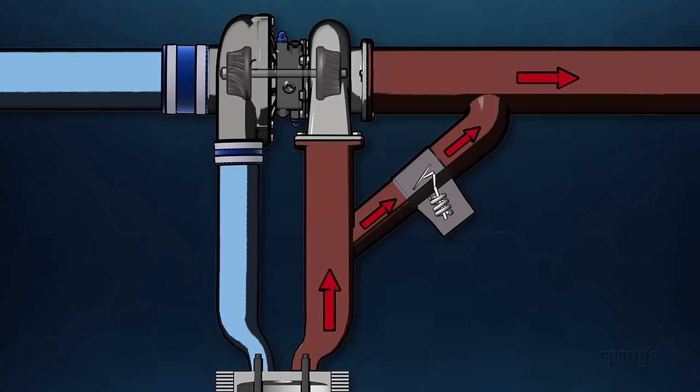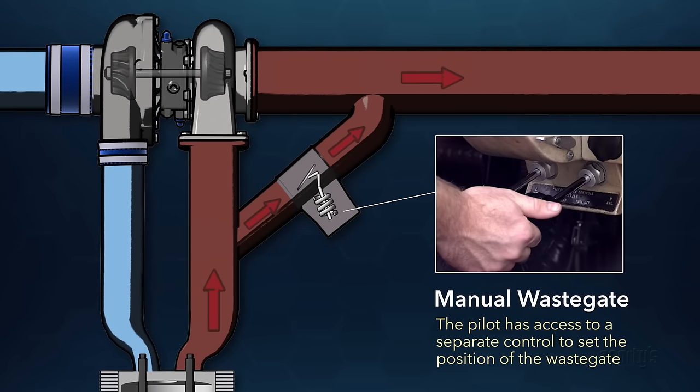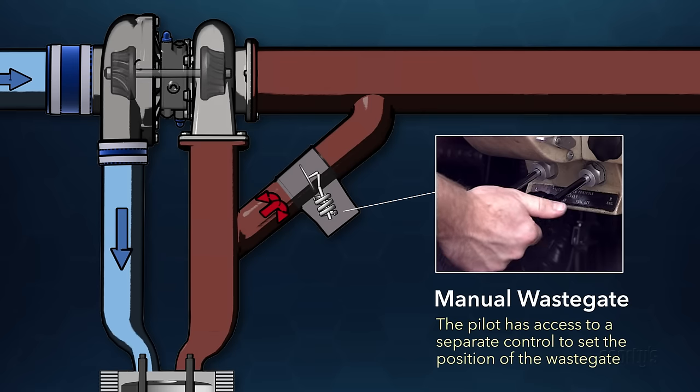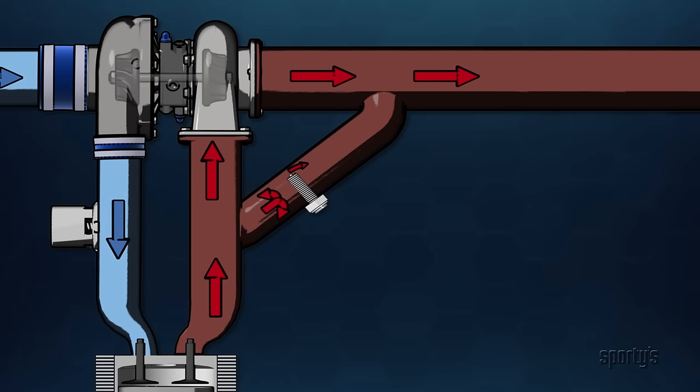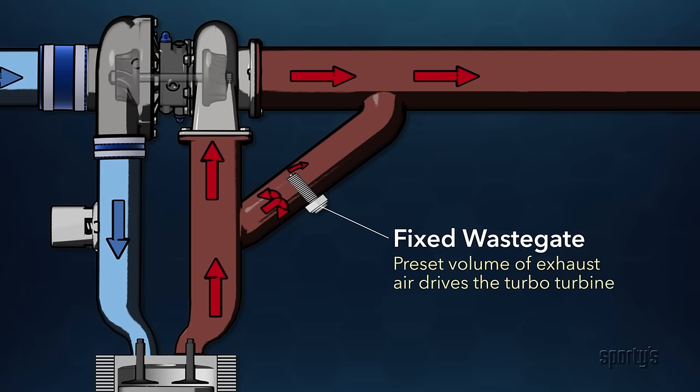The least sophisticated turbocharger systems have full manual control, where the pilot has a separate control to set the position of the wastegate. On some ground boosted engines, the conventional wastegate is replaced by a fixed opening that continually allows a pre-set volume of exhaust gas to escape. This is sometimes called a fixed wastegate system.